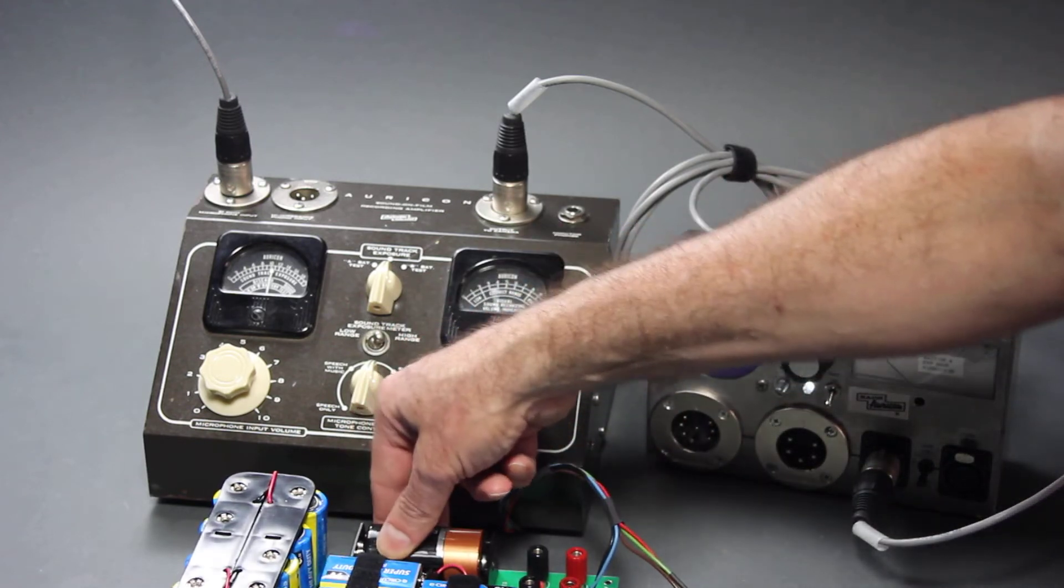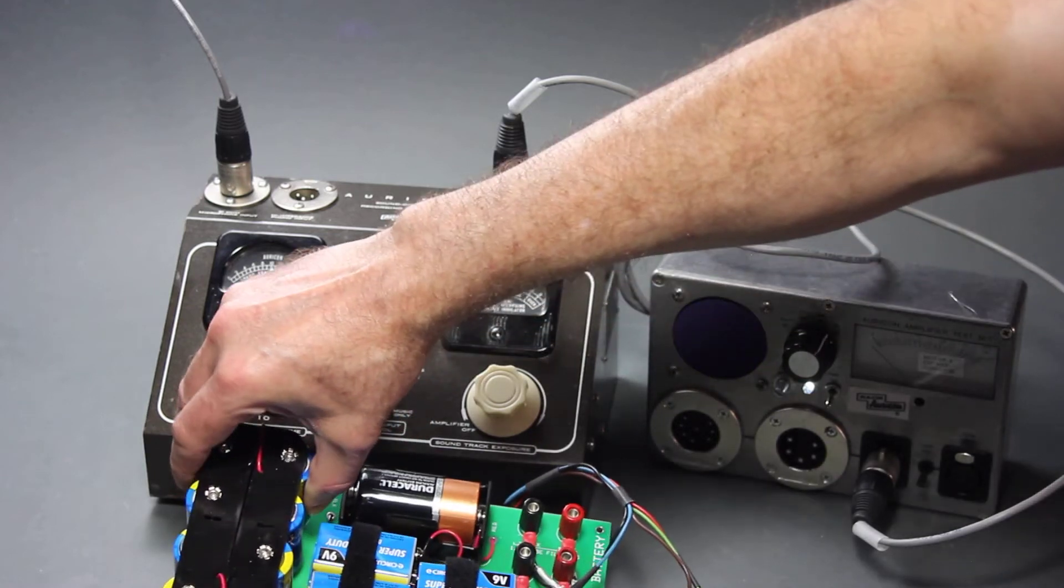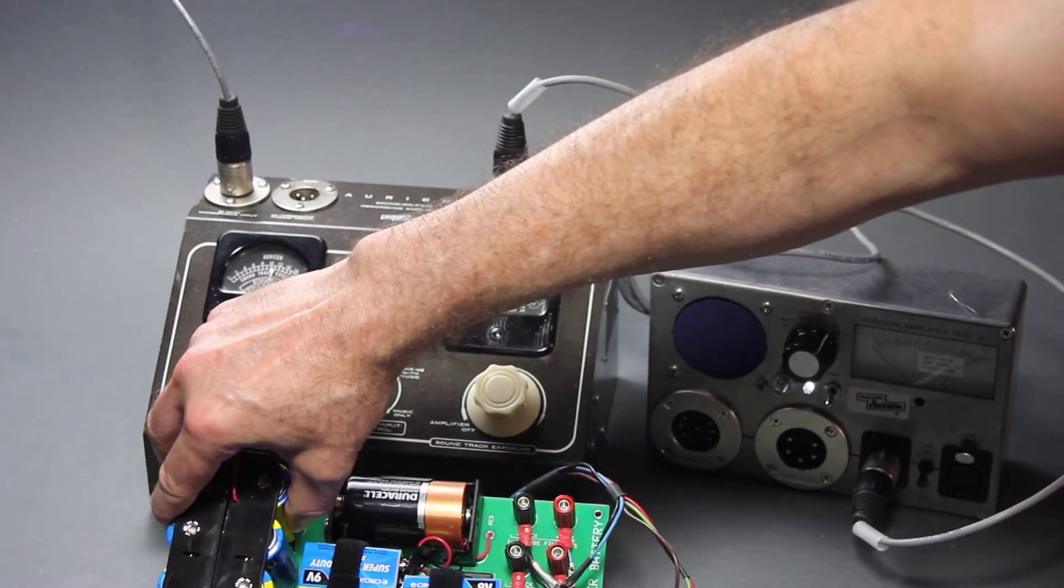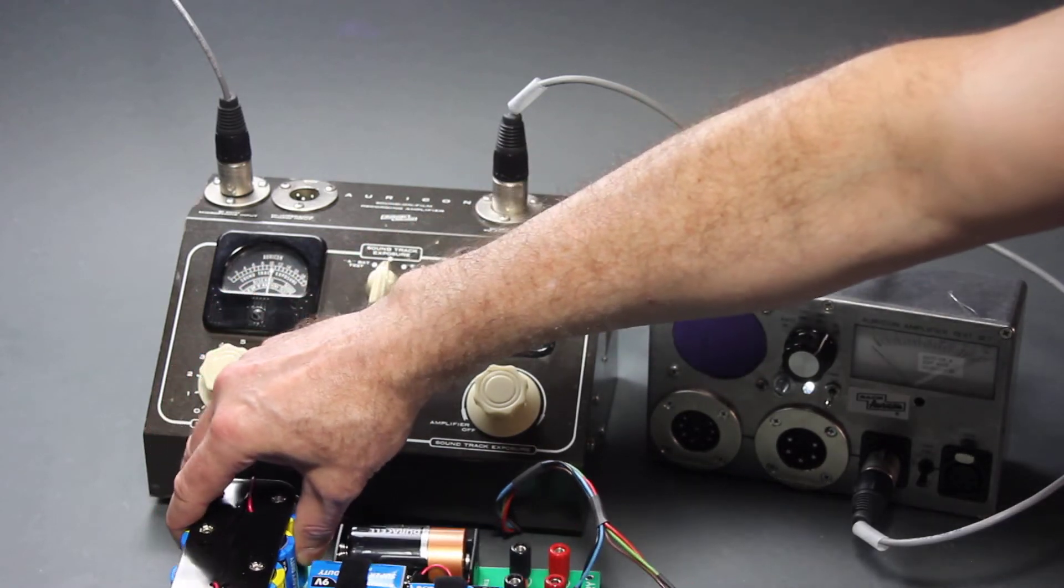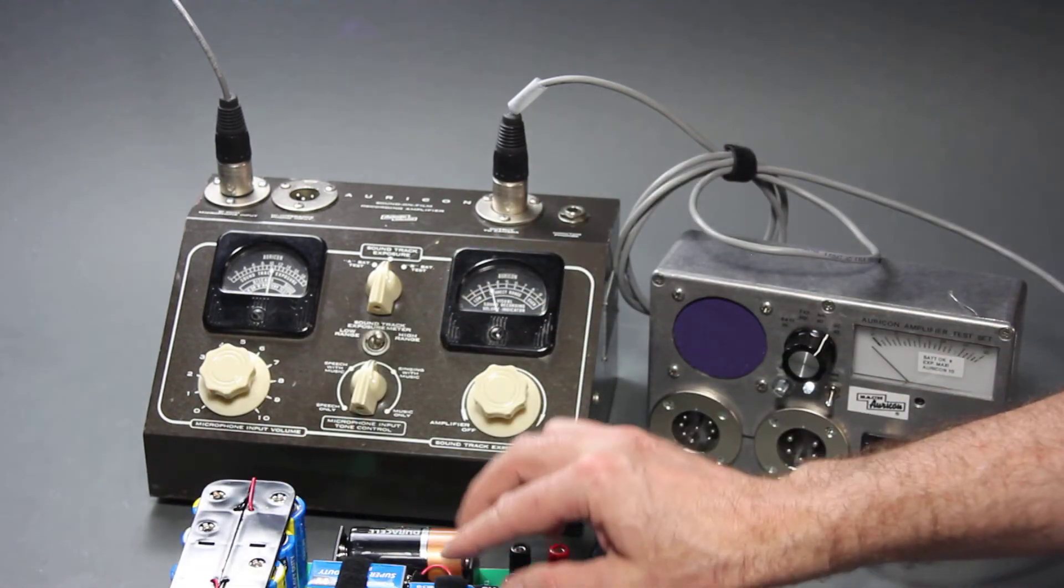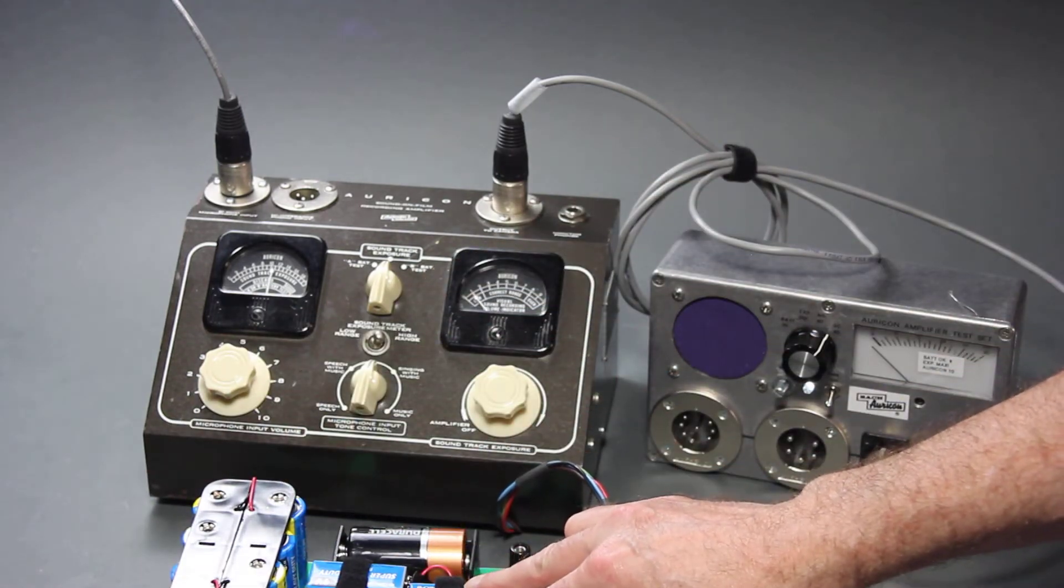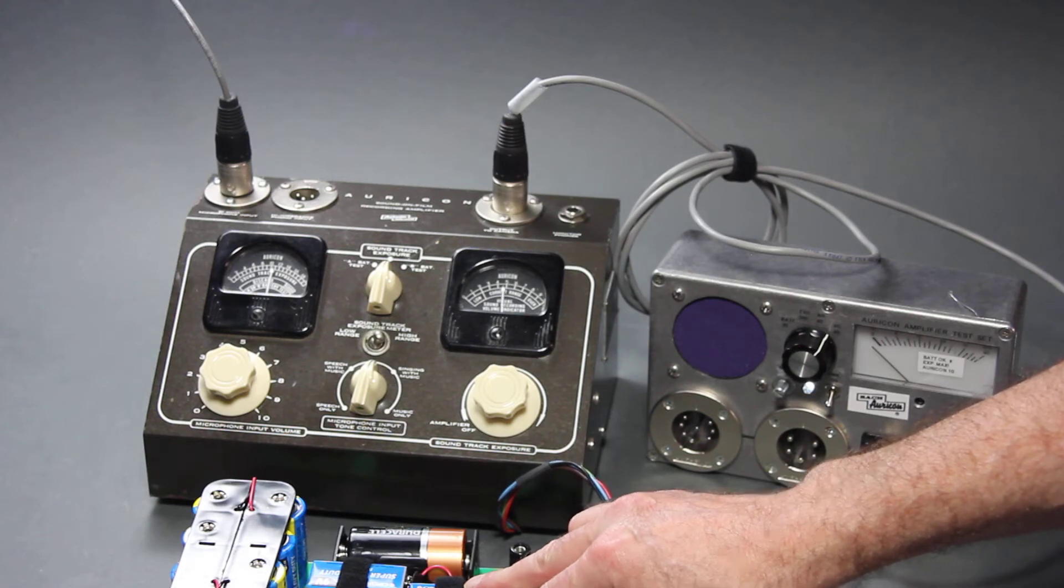which snaps into this plastic holder, then the 8 C cells for the exposure lamp, and then once all those are in place, then you can snap up the 10 9-volt batteries.